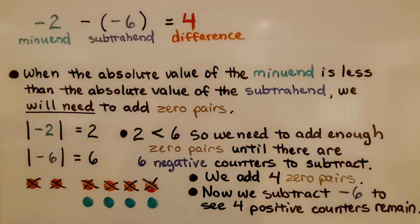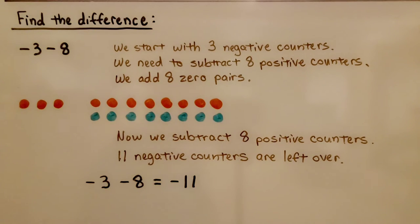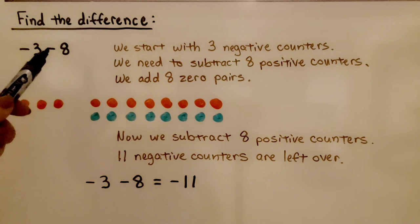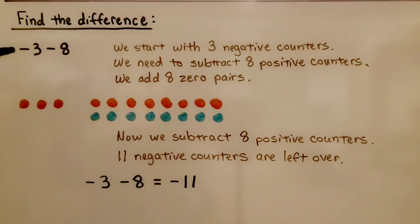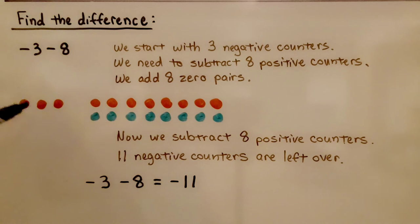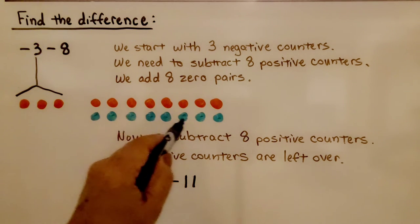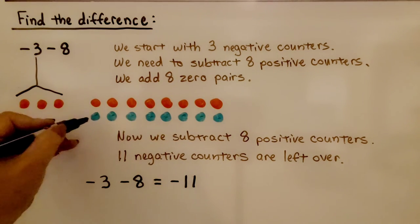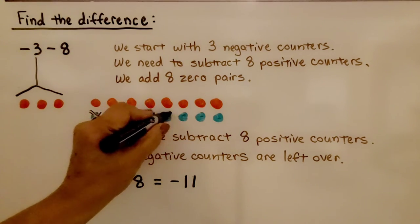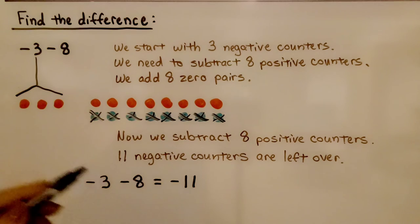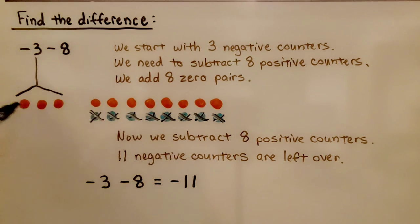If this seems confusing, stick with me — I have a few more examples. We need to find the difference; it's a subtraction problem. We have negative three and we need to take away positive eight, so this is negative three minus positive eight. We start with three negative counters. We need to subtract eight positive counters but we don't have them, so we add eight zero pairs so there will be eight positive counters. Now we subtract those eight positives, and we're left with eleven negative counters. Negative three minus eight is equal to negative eleven.